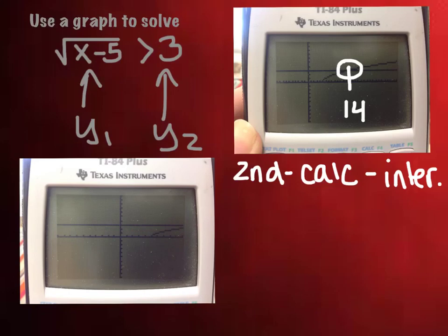But the thing is, we want to know where is it greater than 3. And greater than just means up. Where is it above 3? So all of this, and then going on forever, right?